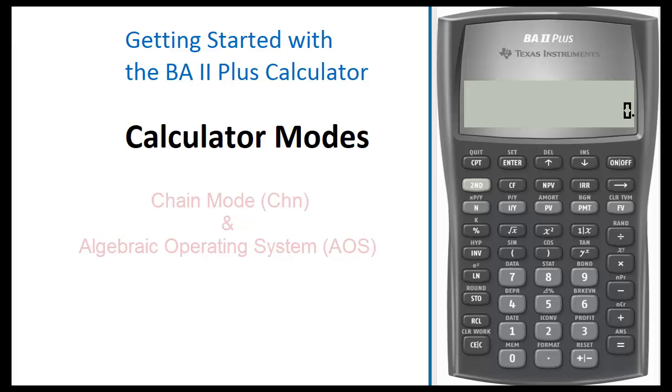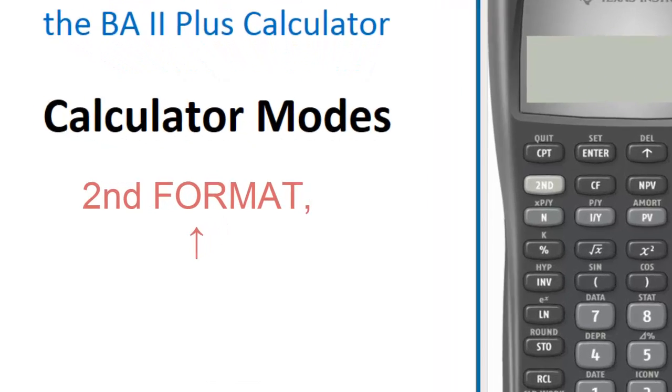The BA II Plus Calculator uses two modes: the chain mode and the Algebraic Operating System mode. By default, the BA II Plus Calculator is set to the chain mode. To see this, press 2nd Format.